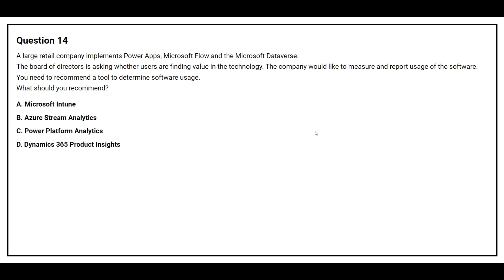Question 14: A large retail company implements Power Apps, Microsoft Flow, and Microsoft Dataverse. The board of directors wants to know whether users are finding value in the technology, and the company would like to measure and report software usage. What should you recommend? Options: A) Microsoft Intune, B) Azure Stream Analytics, C) Power Platform Analytics, D) Dynamics 365 Product Insights. The correct answer is option C: Power Platform Analytics.